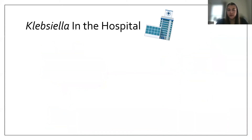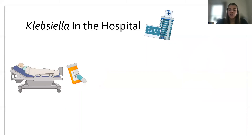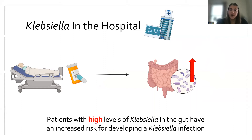Klebsiella in the hospital is where it's most important because it causes infections in hospitalized patients who are already really vulnerable. We know that in the hospital, the gut of patients is actually a major source of Klebsiella. Certain patients have high levels of Klebsiella in the gut, and based on previous research, patients with high levels of Klebsiella in the gut have a higher risk for developing infection with Klebsiella outside of the gut, like in the lungs or the bloodstream.